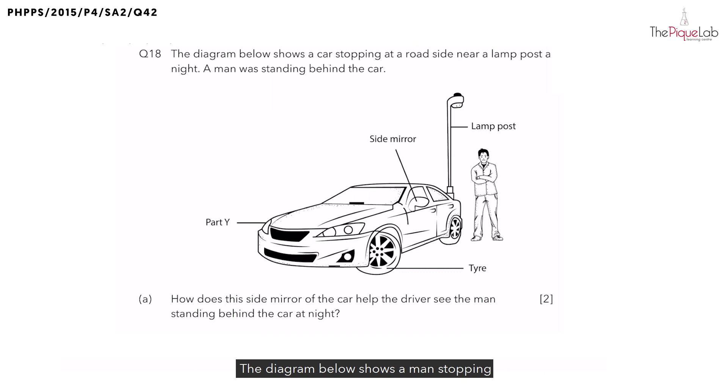The diagram below shows a man stopping at a roadside near a lamppost at night. Now a man was standing behind the car and part A asks how does this side mirror help the driver to see the man standing behind the car at night. So in order to craft the answers, students are encouraged to draw light rays to show how light travels in order for the driver to see the man behind the car.